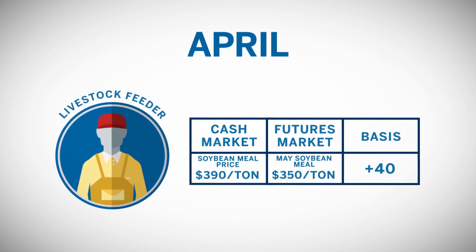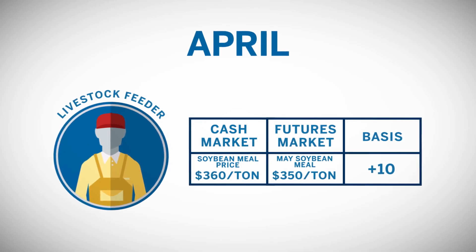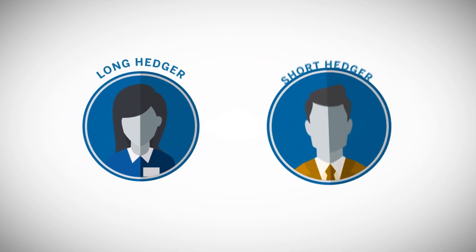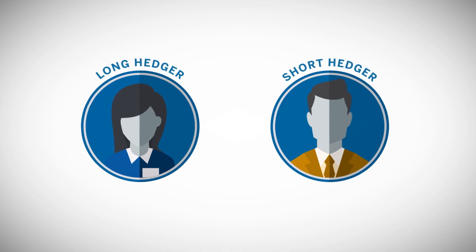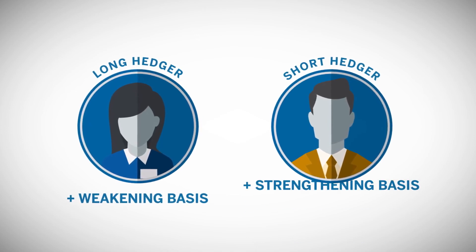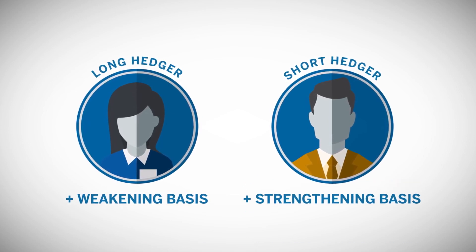Conversely, if the basis weakens, moving from $20 over to $10 over, the net purchase price drops to $360 per ton — $350 plus $10. Again, note that long hedgers benefit from a weakening basis, and short hedgers benefit from a strengthening basis.